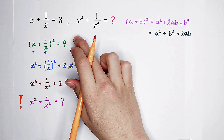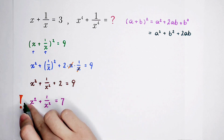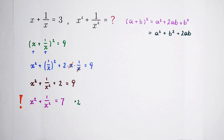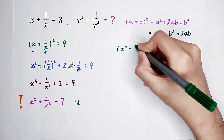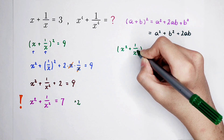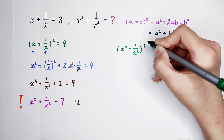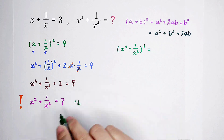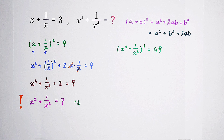We'll just solve for x to the power of 4, then plus 1 over x to the power of 4, by using the same method. Now, square both hand sides of this equation. Therefore, we can get x to the power of 2 plus 1 over x to the power of 2, all squared, equal to 7 squared, which is 49.